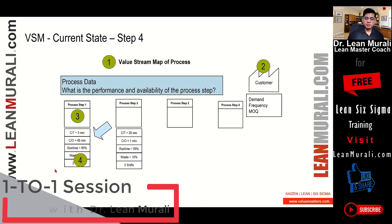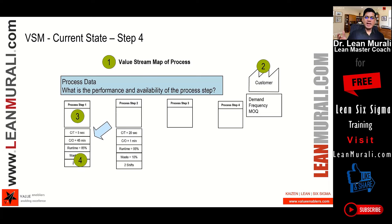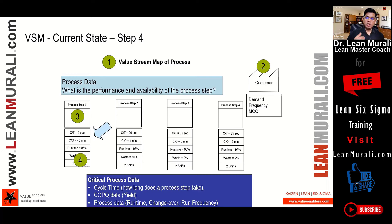I'm going a little faster here because we've already explained this in the case study and I don't want to spend too much time on each point when we can discuss more valuable things. Critical process data is definitely cycle time — how long the process step takes — and most of the time people also calculate yield: what is the input given and what is the output received.